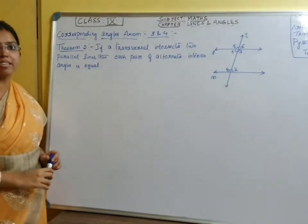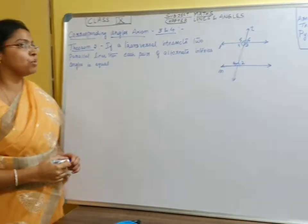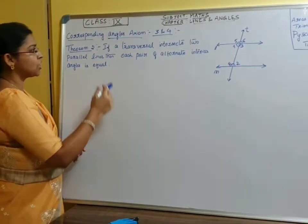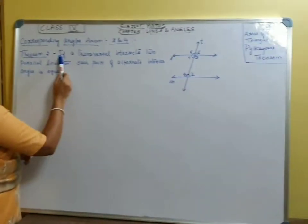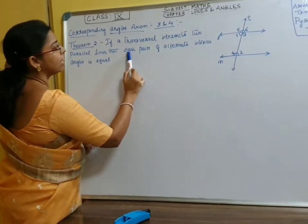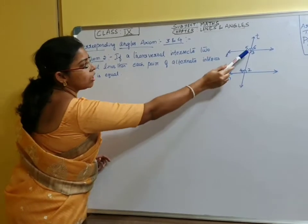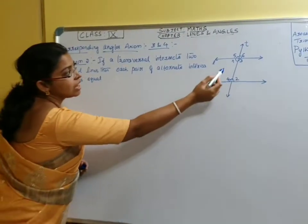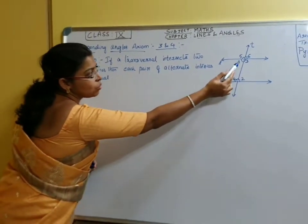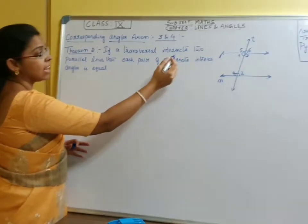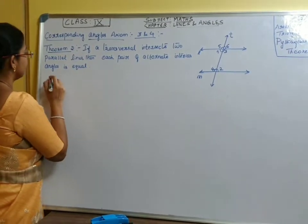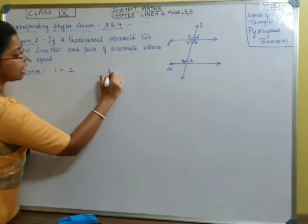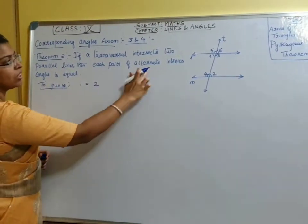Axiom 4 is the converse of Axiom 3. It says if a transversal intersects two lines and each pair of corresponding angles are equal, then the two lines will be parallel to each other. Based on this axiom, we have Theorem 2 and 3, which prove that alternate angles formed when a transversal intersects two parallel lines are equal. Now L and M are two parallel lines and T is a transversal. If a transversal intersects two parallel lines, then each pair of alternate interior angles — here angles 1 and 2, and 3 and 4 — are alternate interior angles. We need to prove that angle 1 equals angle 2 and angle 3 equals angle 4.